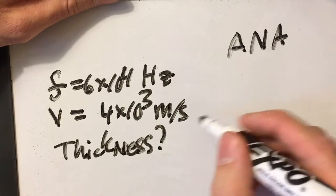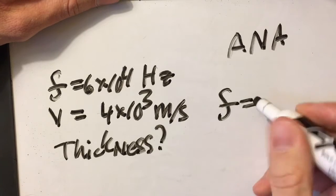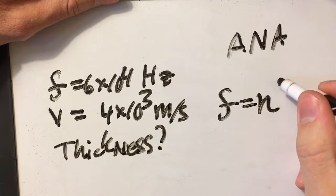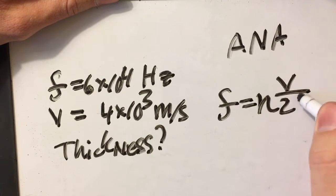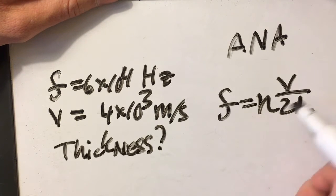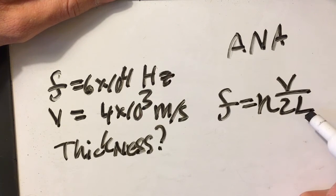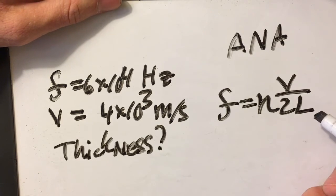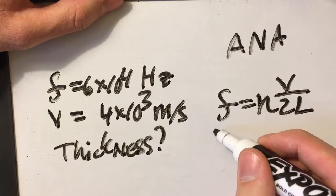Frequency equals n velocity over 2L. So what do we have? We have frequency, we have this velocity, and L would be the thickness. That's what we're going to be searching for. So we just rearrange this equation to solve for L.